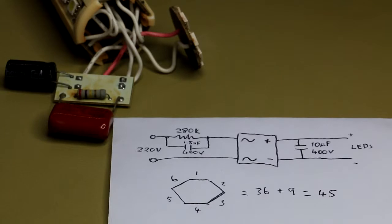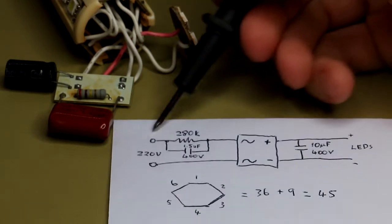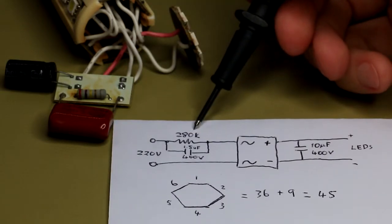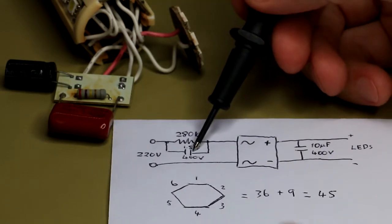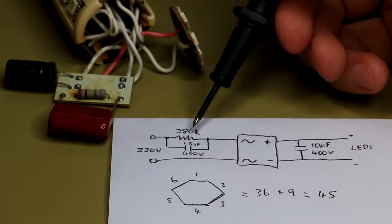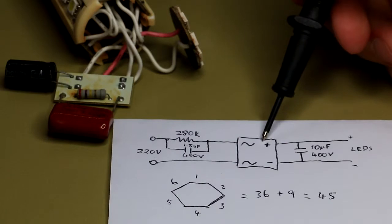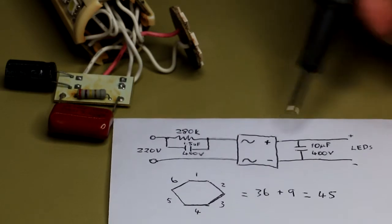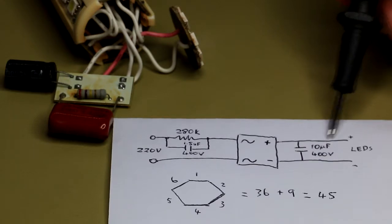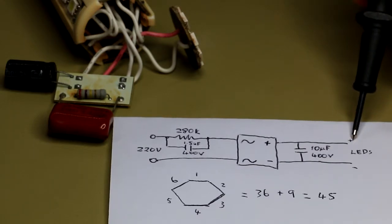Okay, I quickly drew out the circuit here just so that I can understand it. It's fairly straightforward. The 220 volts comes in here. There's a 280K and the 1.5 microfarad capacitor, which I'm assuming is some sort of a filter, going straight into the full wave bridge rectifier. Then off to the 10 microfarad capacitor for some smoothing, which then goes to the LEDs.